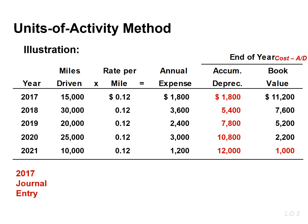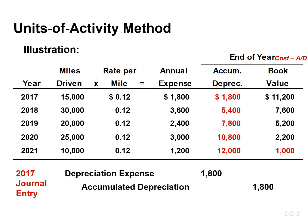The journal entry to record depreciation expense in the first year is a debit to depreciation expense for $1,800 and a credit to accumulated depreciation for the same amount. Just like in the other methods, depreciation stops when the asset's book value equals its expected salvage value.